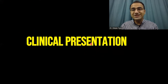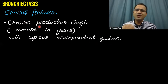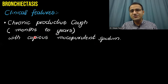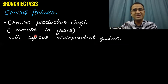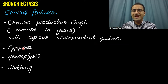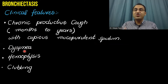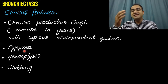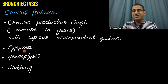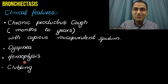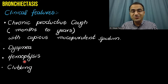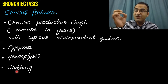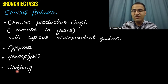The clinical presentation of bronchiectasis includes chronic productive cough lasting months to years, with copious, mucopurulent, foul-smelling sputum. Patients will also have dyspnea due to obstruction of the bronchioles and impaired oxygenation from lung damage. Patients may also complain of hemoptysis — blood in sputum — due to damage of bronchial arteries, as well as clubbing of the nails.